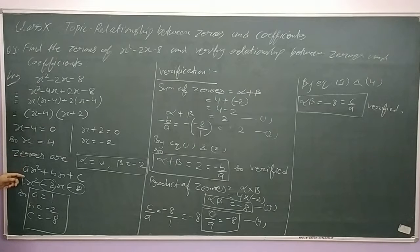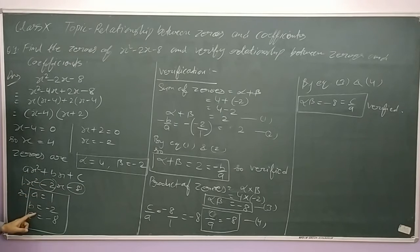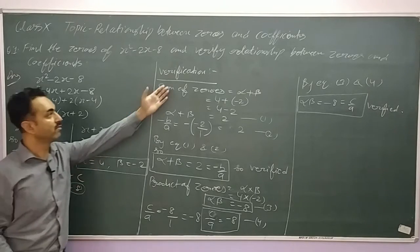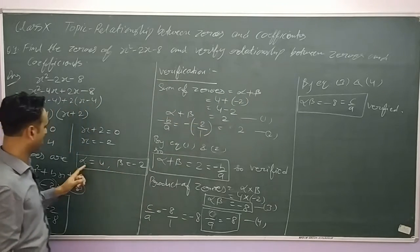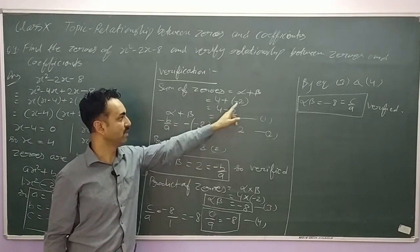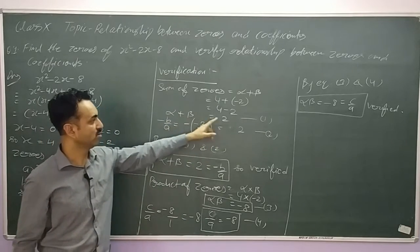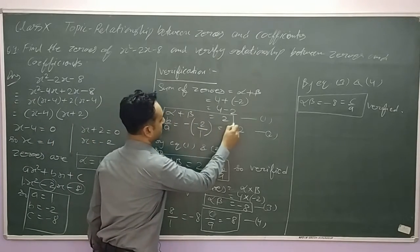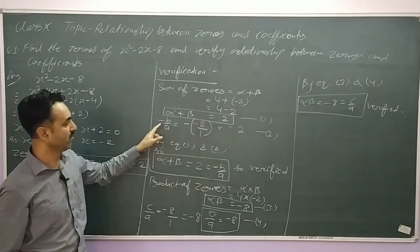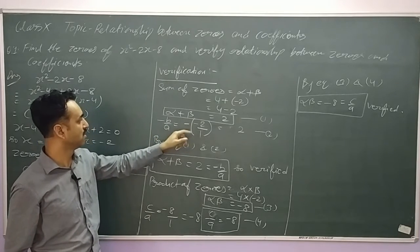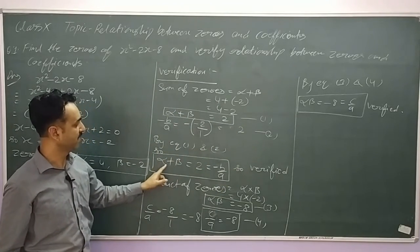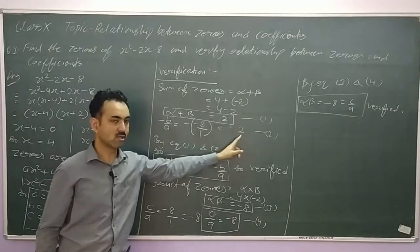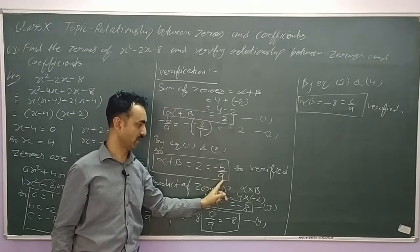Now we find a, b, c by comparing with the standard form ax squared plus bx plus c: a equals 1, b equals minus 2, c equals minus 8. For verification, sum of zeros: alpha plus beta equals 4 plus (minus 2) equals 2, which is equation 1. Now minus b upon a equals minus(minus 2) upon 1 equals 2, which is equation 2. By equations 1 and 2, alpha plus beta equals 2 equals minus b upon a. Verified.